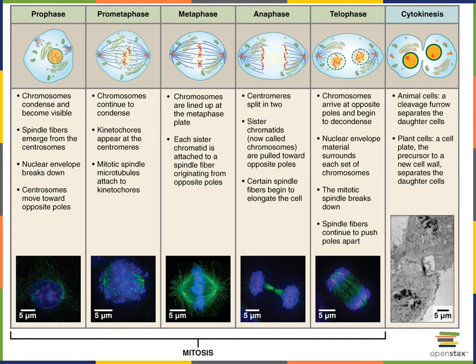The result of mitosis is two daughter cells, and those daughter cells are essentially genetically identical because one sister chromatid from DNA replication was delivered into each of the two new daughter cells.